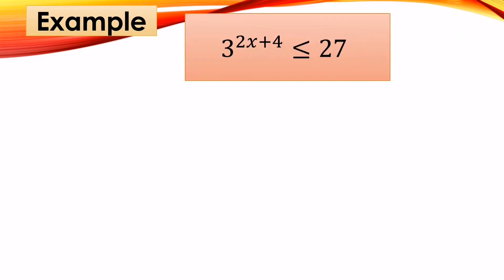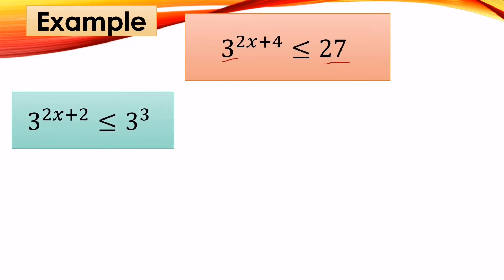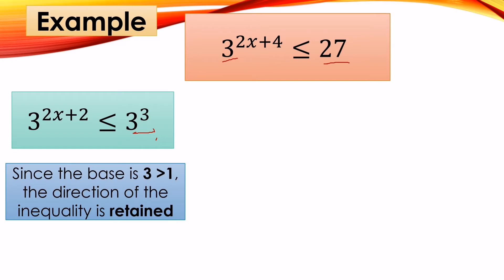Another example: 3^(2x+4) ≤ 27. We find the common base between 3 and 27, which is 3. So we rewrite it as 3^(2x+2) ≤ 3^3, since 3 cubed equals 27 (3 × 3 = 9, × 3 = 27). Since the base 3 is greater than 1, the inequality symbol is retained — the less than or equal to sign stays.